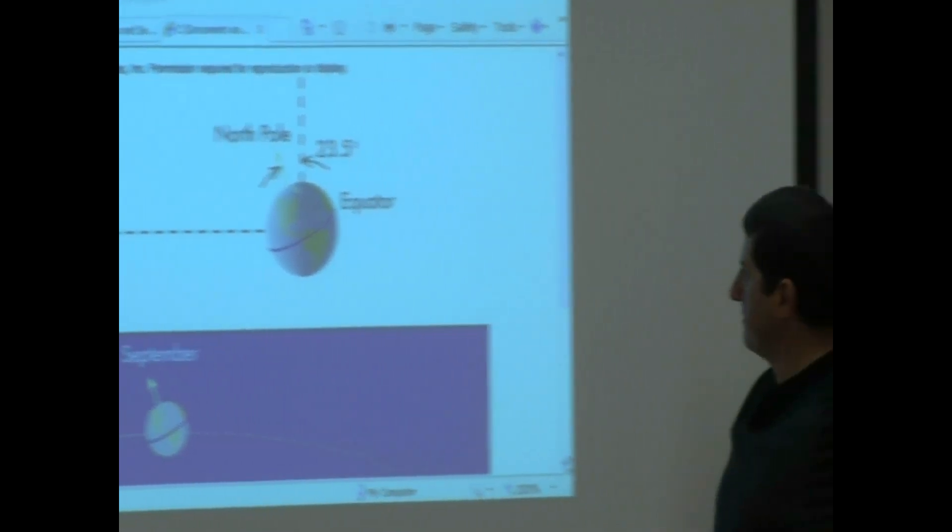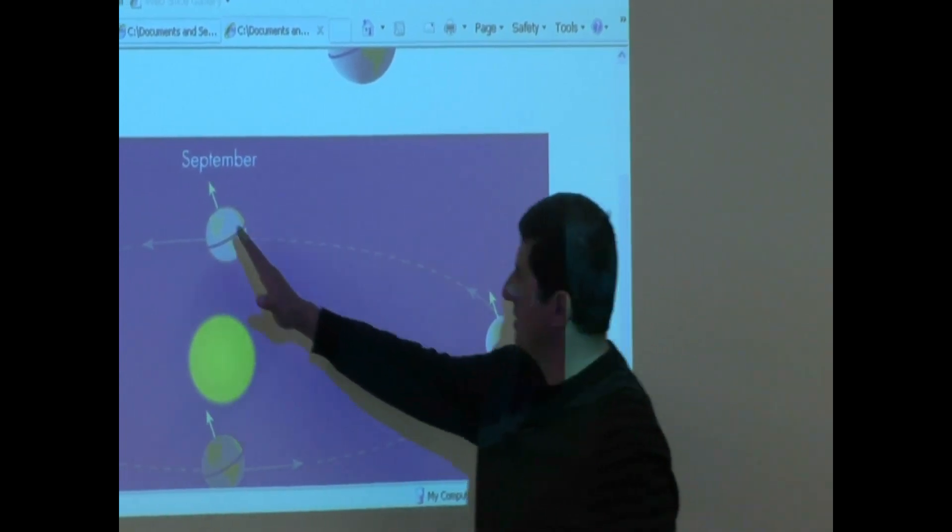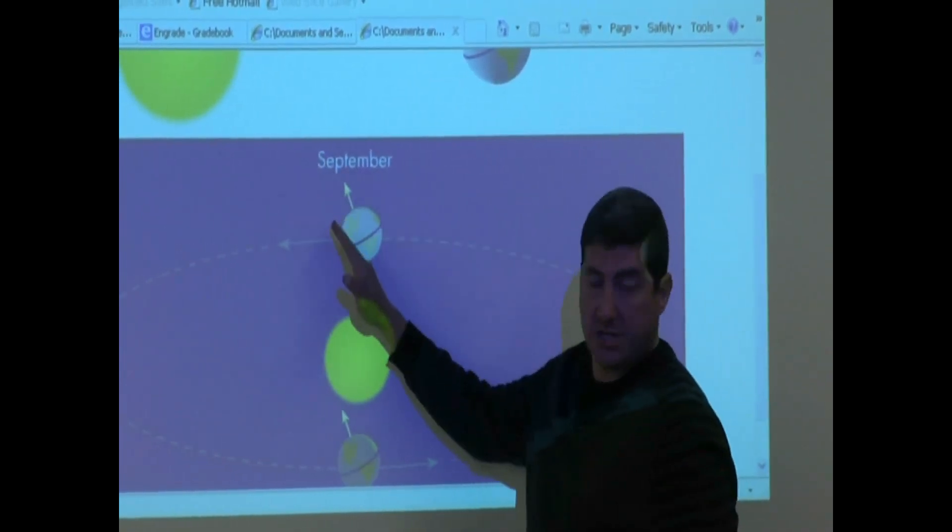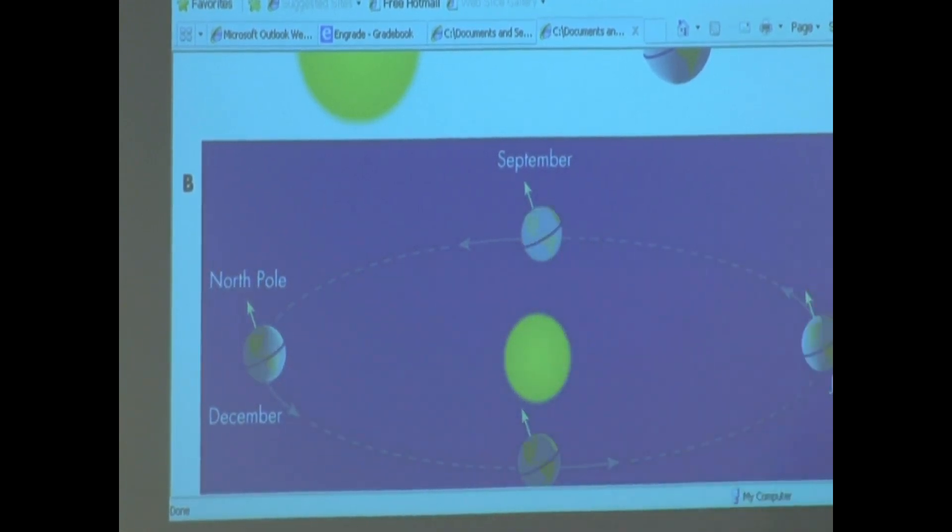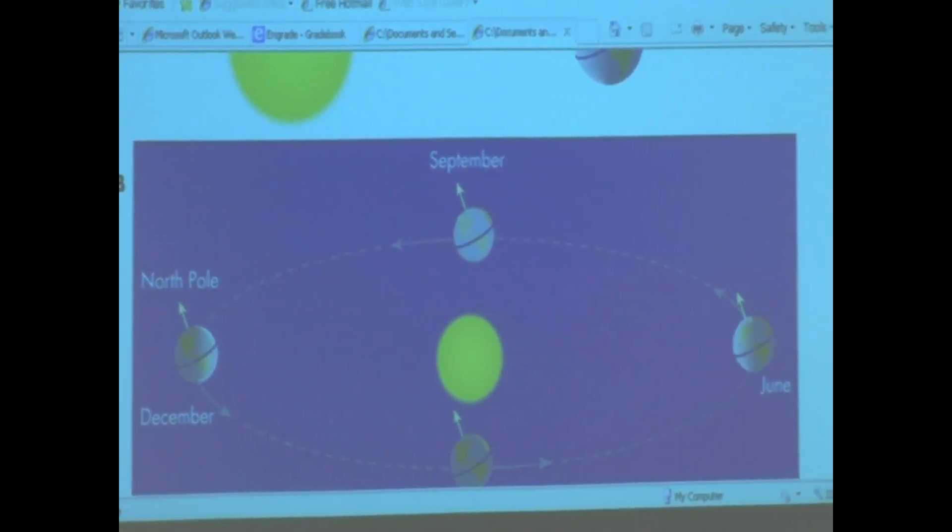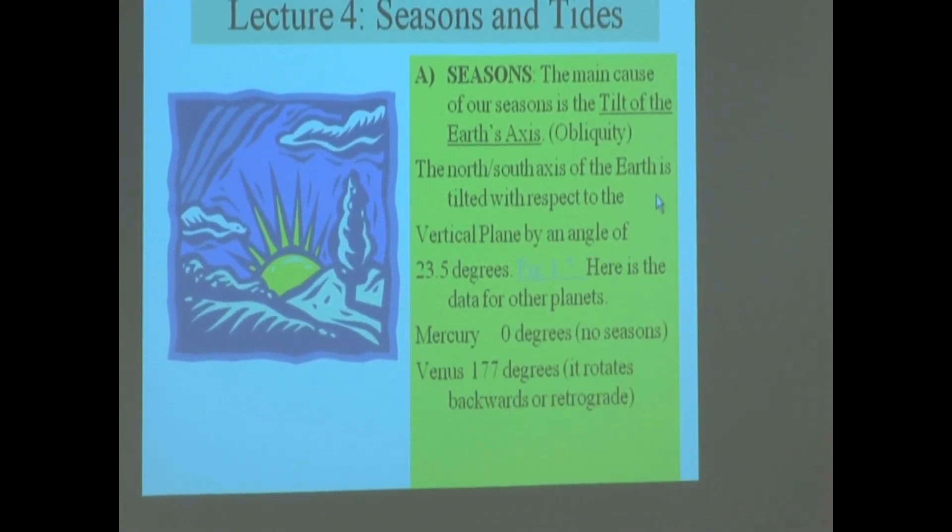When does it most face the Sun? June 21. In September, it runs parallel to the Sun. December, it points away from the Sun. Here's the data for the other planets.